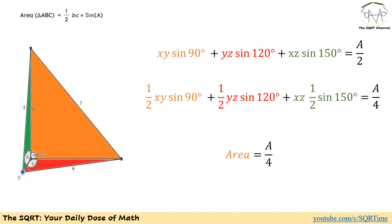Recall that the area of a triangle with sides b, c and included angle α is (1/2)·bc·sin(α). Rewriting our expression divided by 2, we get: (1/2)·xy·sin(90°) + (1/2)·yz·sin(120°) + (1/2)·xz·sin(150°).